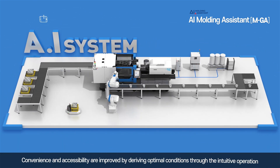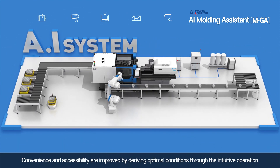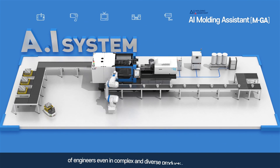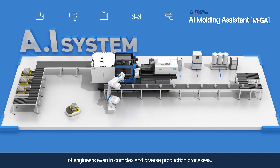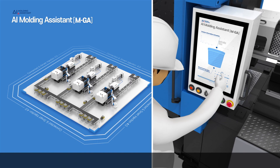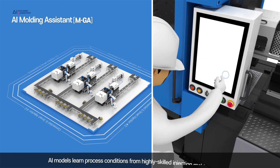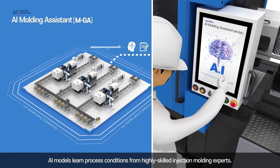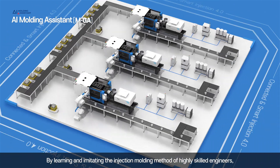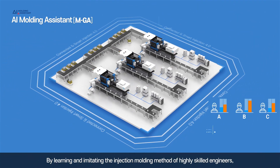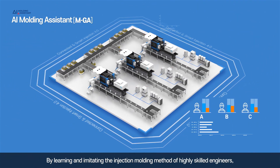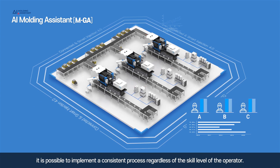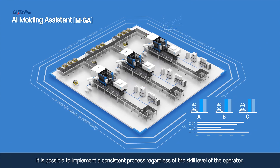Convenience and accessibility are improved by deriving optimal conditions through the intuitive operation of engineers, even in complex and diverse production processes. AI models learn process conditions from highly skilled injection molding experts. By learning and imitating the injection molding method of highly skilled engineers, it is possible to implement a consistent process regardless of the skill level of the operator.